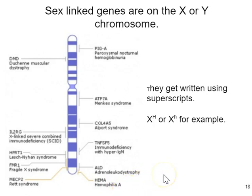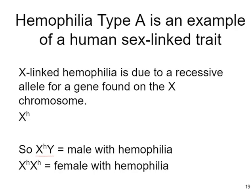Hemophilia is a group of genetic disorders. When you have hemophilia, your blood does not clot appropriately, which means if you get a bad cut or bruising, you'll continue bleeding for too long to be healthy — it's a very dangerous condition. There are many forms of hemophilia. Hemophilia A is related to having a faulty or mutant allele on your X chromosome, and it is an example of a human sex-linked trait.